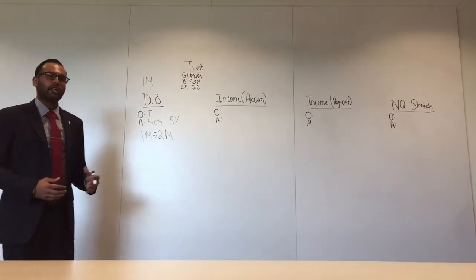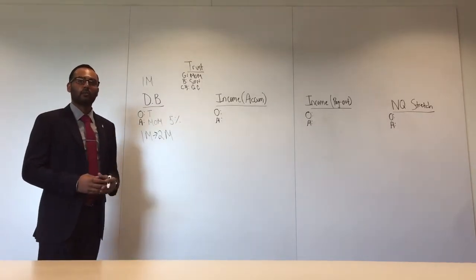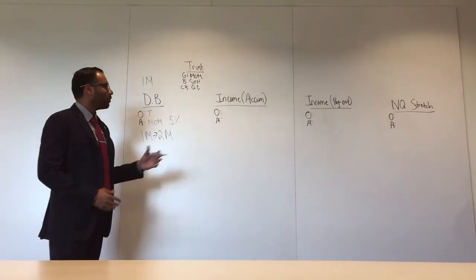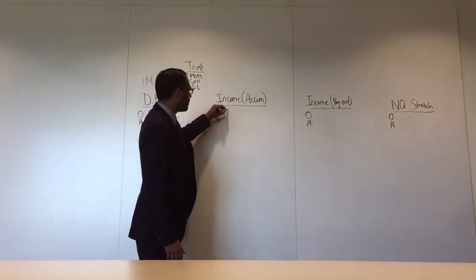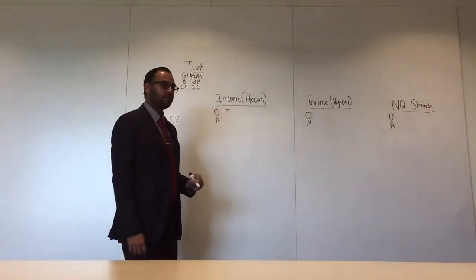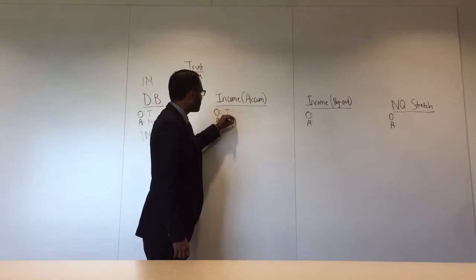Now let's say that son doesn't want cash. Let's say that son wants this to supplement his retirement income. What we can do is we can purchase an annuity with the trust as the owner and the son as the annuitant.